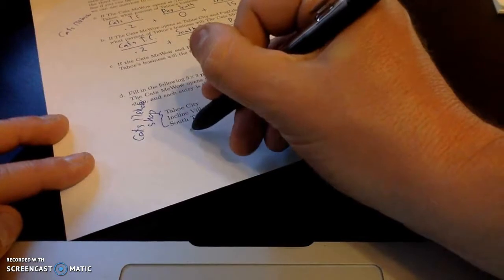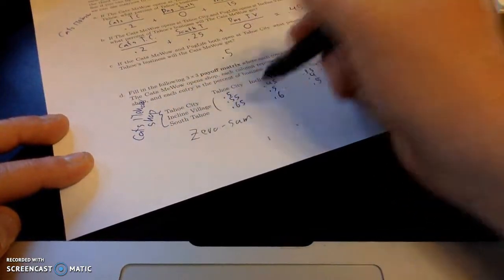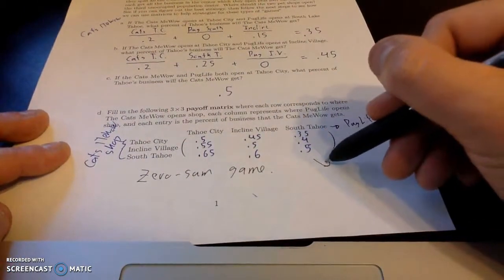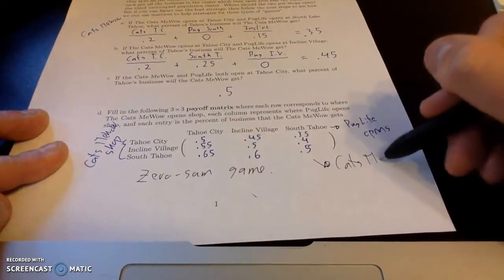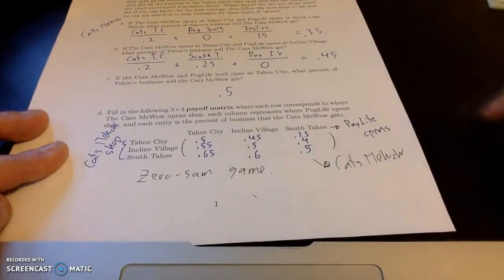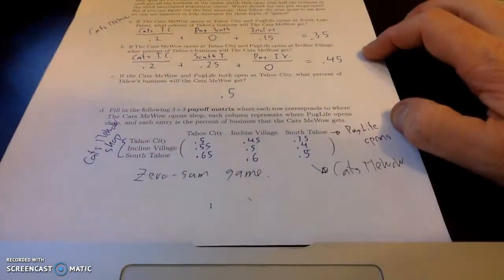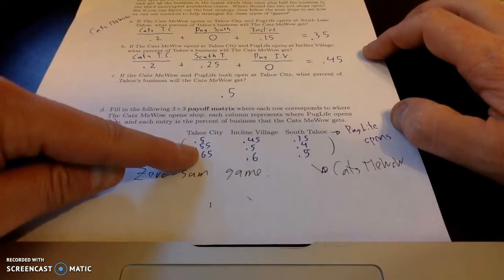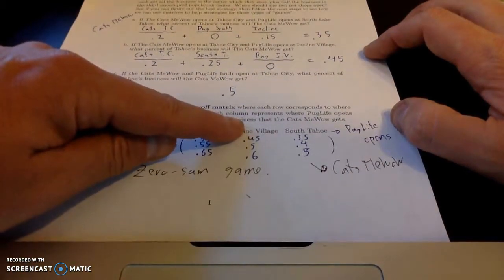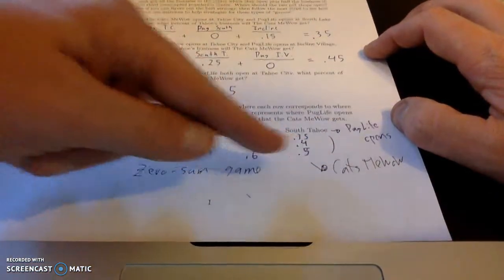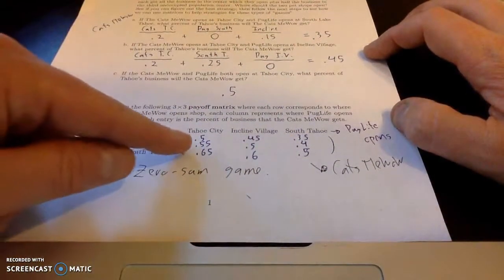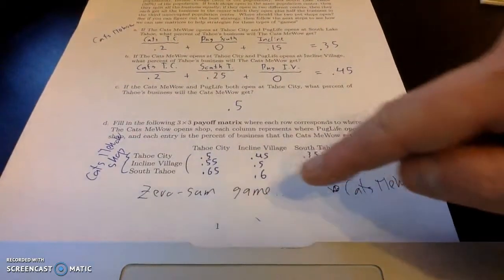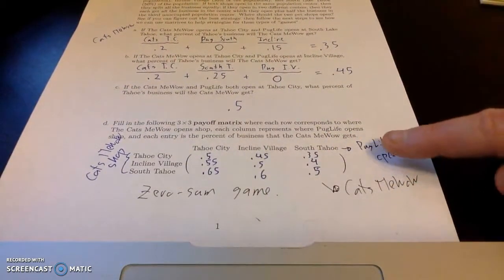So here we have a payoff matrix for a game. And this is an example of a zero sum game. Meaning all of these are for Cats Meow. But if I wanted to write this payoff matrix for Pug Life instead, it would be identical except subtract 1. So it would be 0.5, 0.45, 0.35, 0.55, 0.5, 0.4. Essentially, it would be the same matrix, but you subtract 1, subtract all the entries from 1 to get the Pug Life market share. So zero sum just means whatever Cats Meow gets, Pug Life does not, and vice versa.